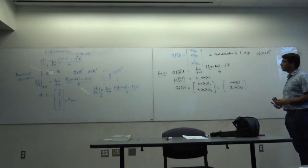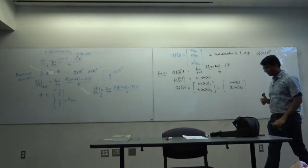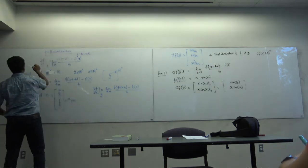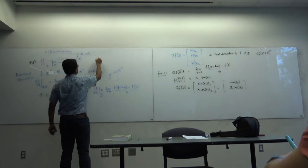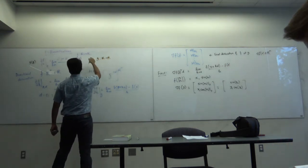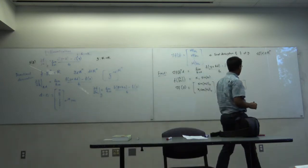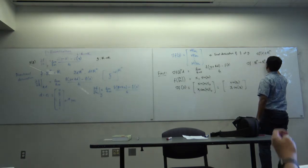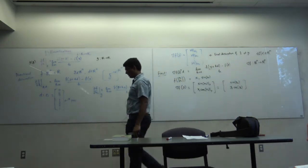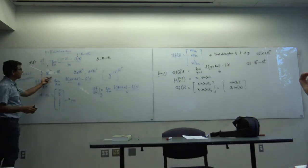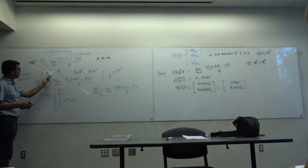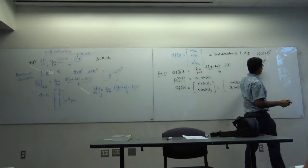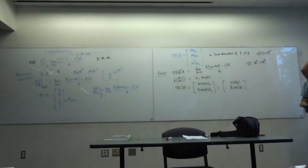Now we have defined the first derivative. We want to define the second derivative of this function. The problem is that in the single-variable case, the first derivative G is a function from R to R, so we can apply the same principle. But here, ∇f is a function from Rn to Rn. We know how to differentiate a function from Rn to R — but now we have a function from Rn to Rn. How do we find the derivative of this?